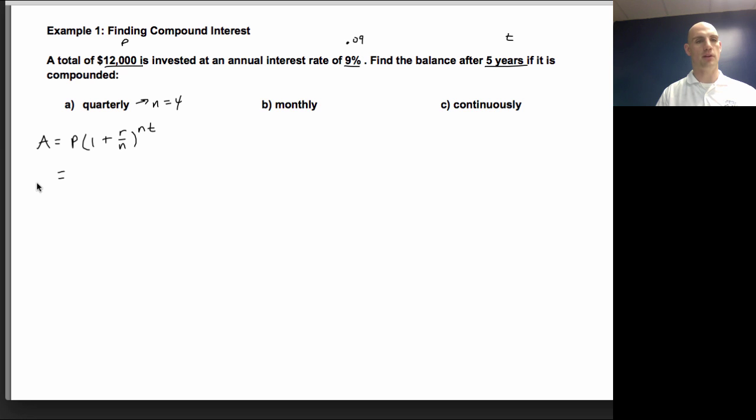And I've got all my pieces. So I'm just going to go ahead and plug. I don't know A, that's what I'm trying to find out my amount. So I'll do 12,000 times 1 plus .09 over n is 4, raised to the n times t, and it's 5. So quarterly means 4 times per year. 5 years is 20. So 12,000, 1 plus 0.09 over 4 to the 20th power. When I put this into my calculator, you want to do that 1 plus .09 over 4 first, and what I'm going to end up with is $18,726.11.